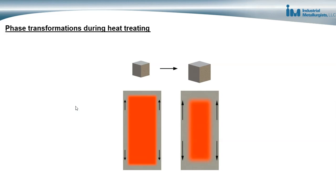When metals go through these heat treatments, there are changes in the phases present, and different phases can have different volumes. One phase changing into another can result in a volume change, and those volume changes can result in changes in residual stresses. In the case where a phase transforms to one with a higher volume, tensile residual stresses can result in the outer portion of the metal.